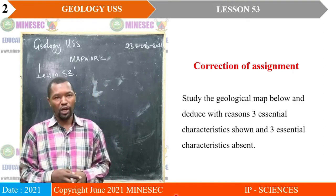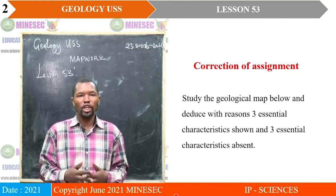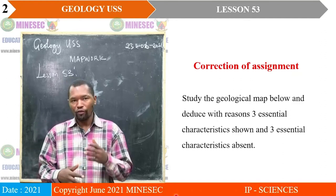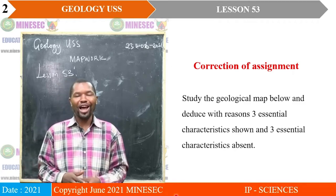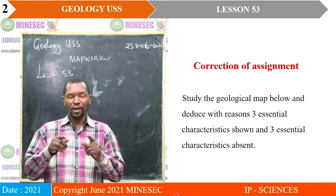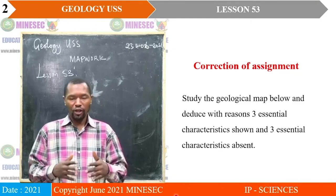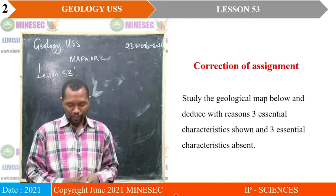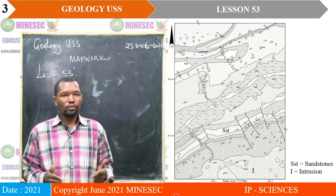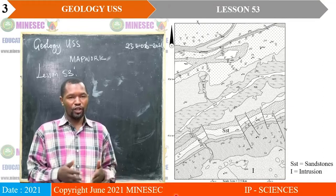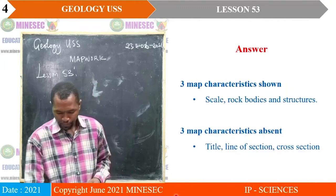The assignment required that we study the geological map below and deduce with reasons three essential characteristics shown and three essential characteristics absent. Remember that our lesson 51 was focused on the characteristics of a geological map. This is the map we are supposed to work on, and then to deduce the essential features present and the essential features absent.